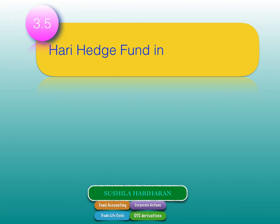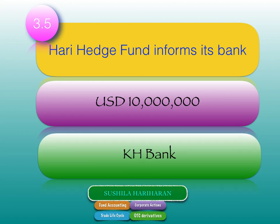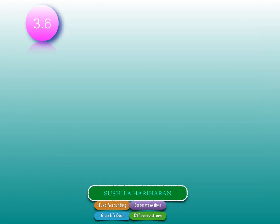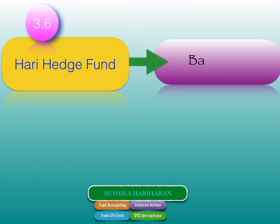Going back to Hari Hedge Fund: it must inform its bank — let's call it Bank XYZ — to transfer USD 10 million to KH Bank, as it has taken a short position. Hari Hedge Fund informs Bank XYZ that it must make the payment of dollars to KH Bank. But how will these instructions be passed? Not through Telex, friendly emails, WhatsApp, or Snapchat. Bank XYZ, being the custodian of Hari Hedge Fund's money, will act only on SWIFT instructions.